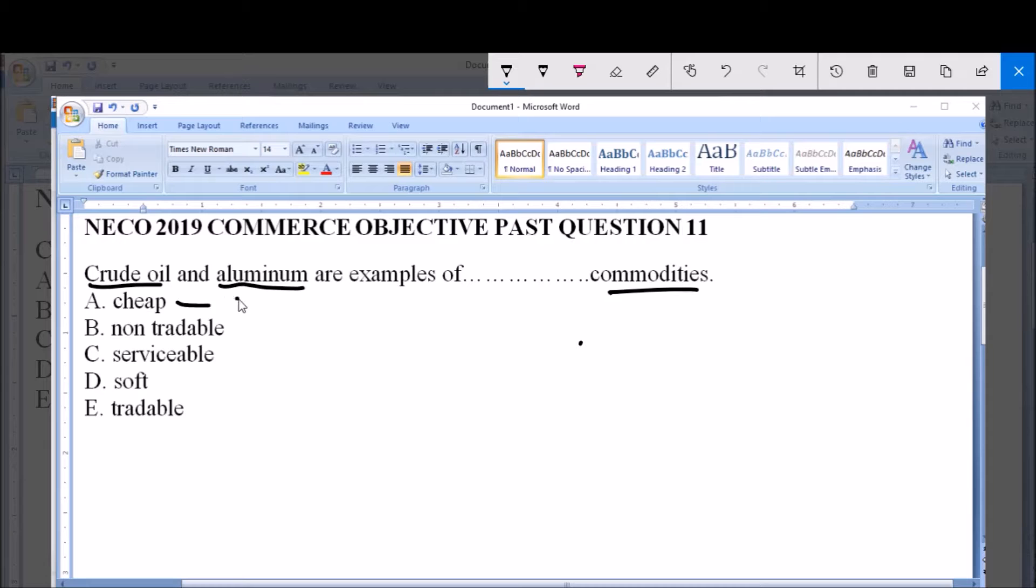Now, cheap commodities are basically just readily available or, as the name implies, commodities that are cheap or inexpensive.